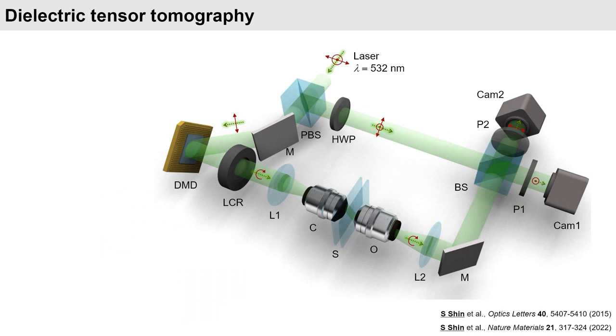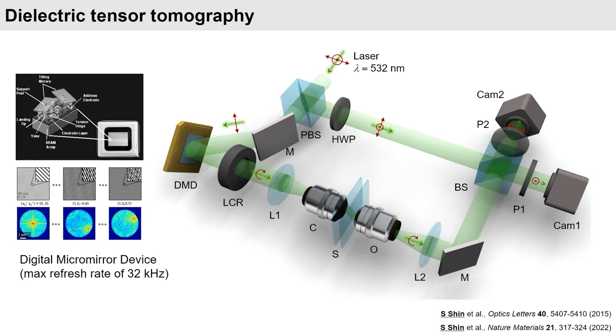My method was experimentally demonstrated using an optical setup based on the Mach-Zehnder interferometry. The fast and robust illumination beam control is achieved by a digital micromirror device or DMD. A liquid crystal retarder or LCR allows to control the polarization of illumination.